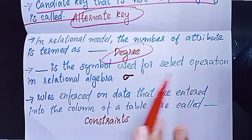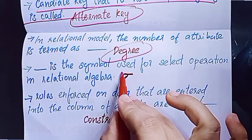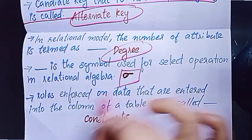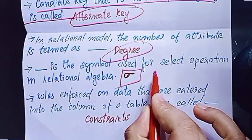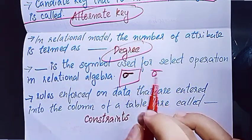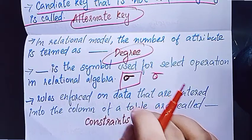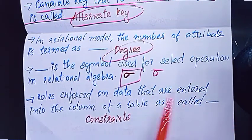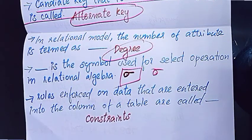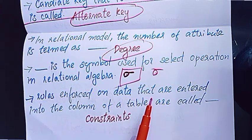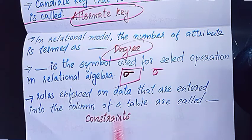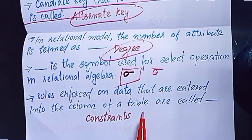The dash symbol is used to select the operation in relational algebra. Rules enforced on data entered into a column of a table are called Constraints.